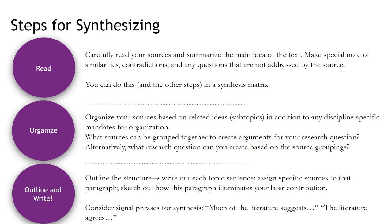Please abide by what is normal or expected in your discipline first and foremost, and then within those parameters figure out the related ideas or subtopics and organize accordingly. You can ask yourself: what sources can be grouped together to create arguments for your research question? Or alternatively, what research question can you create based on certain groupings of sources? Then after you organize your sources, outline your synthesis and write — writing out each topic sentence, assigning specific sources to each paragraph, and sketching out how that paragraph will illuminate your contributions later in the paper.